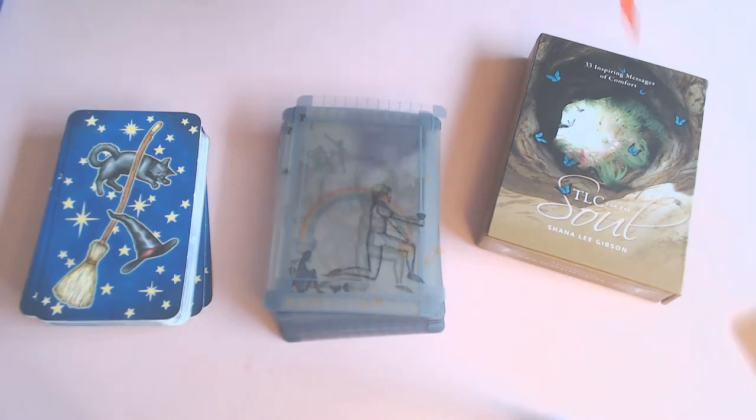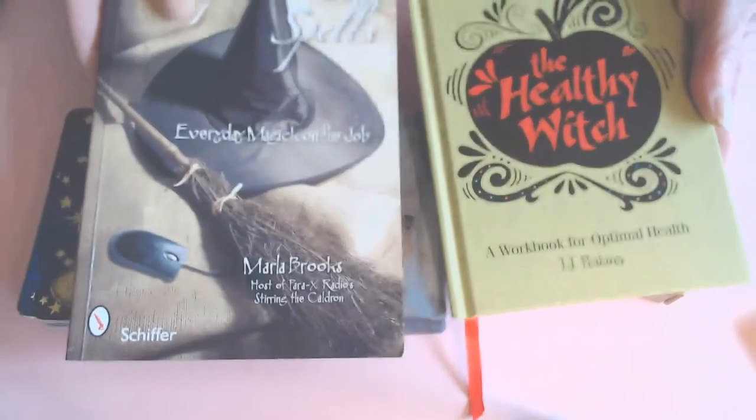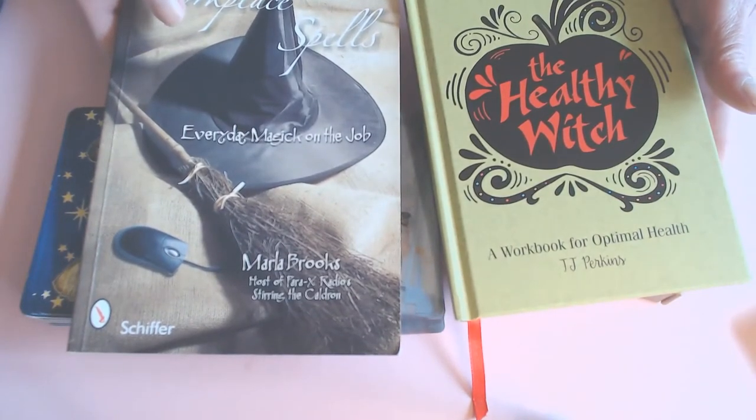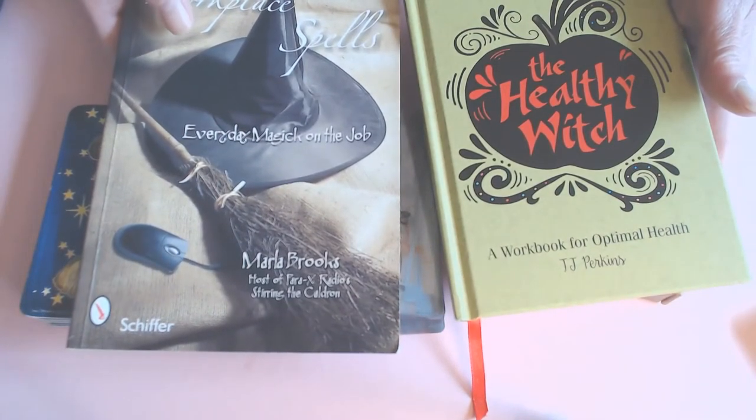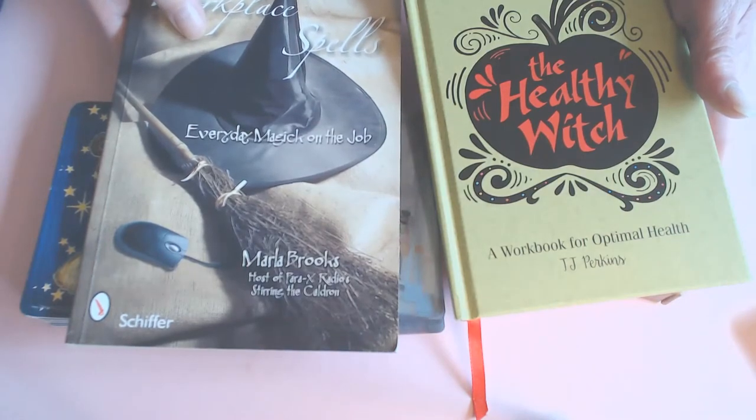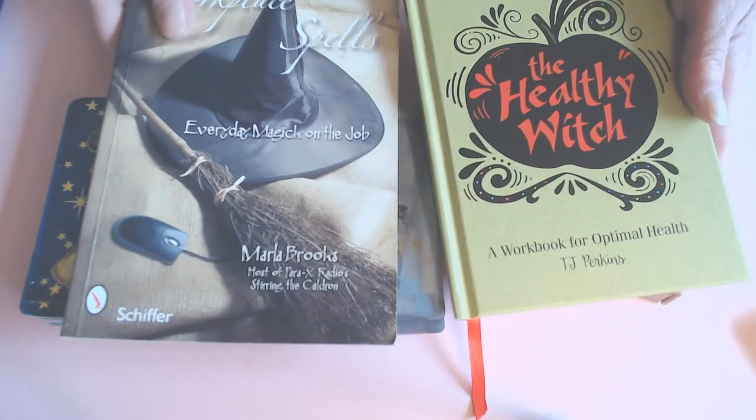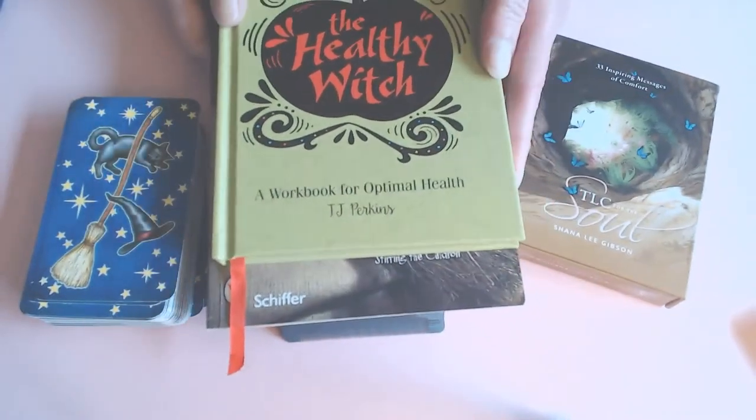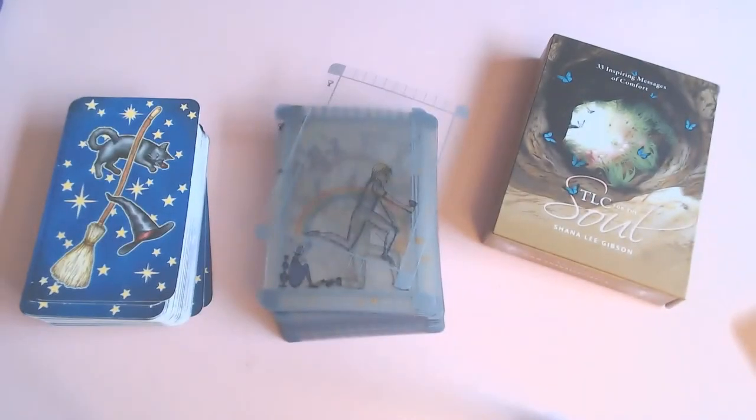If you would like to get into it yourself, then these are the two books. This one is The Workplace and Spells by Marla Brooks. We did the series on her Oracle card, The Witches Oracle Cards. And this one is by TJ Perkins, The Healthy Witch. And it's great fun. Georgina and I are having great fun and laughs and she's bringing also things from the outside, from other cultures, other beliefs, other things that she does.